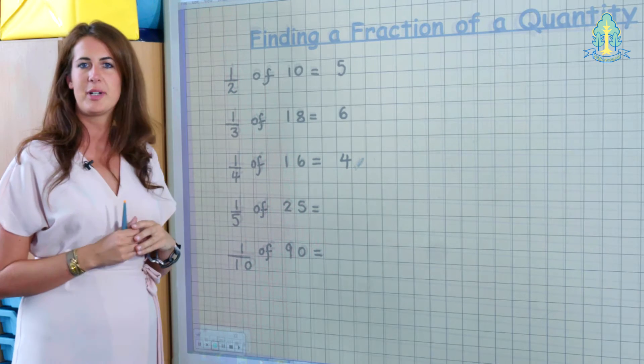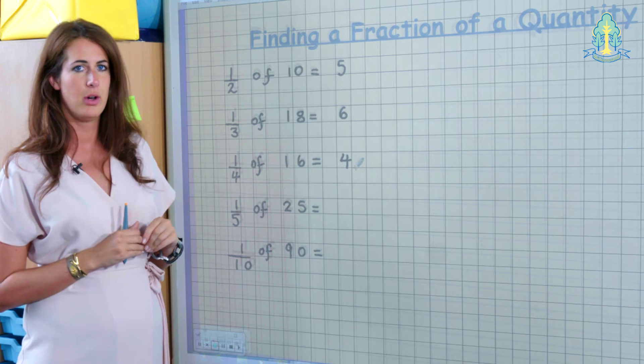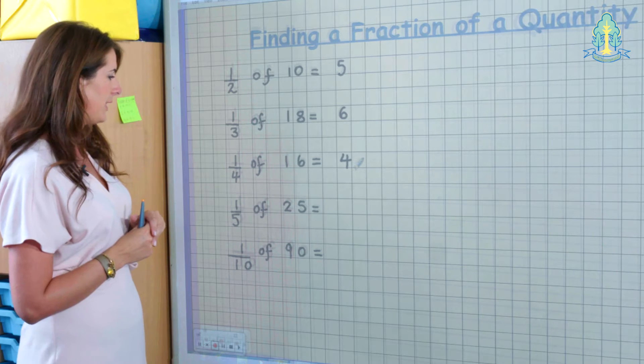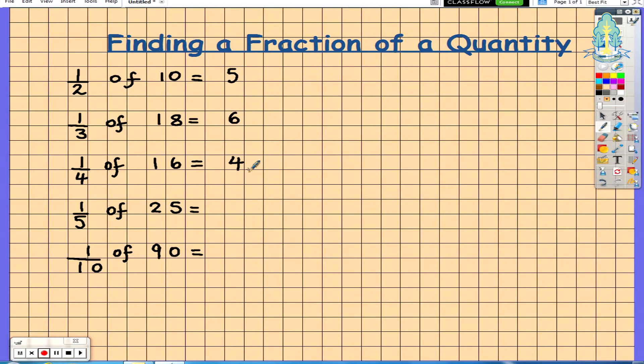And then progressing on to finding 1 fifth of a quantity. So in this example, finding 1 fifth of 25, which will be 25 divided by 5 equaling 5. And then jumping to 1 tenth, in this example here finding 1 tenth of 90 which equals 9.